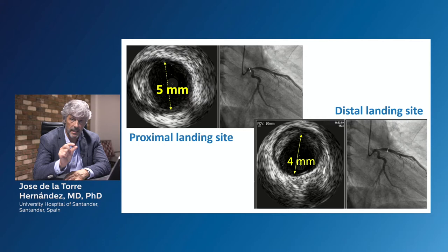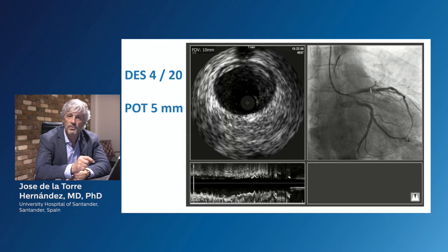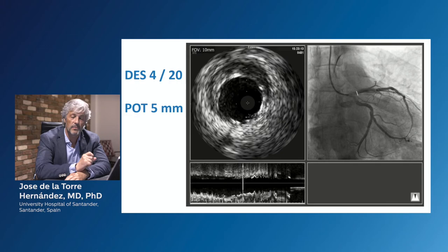We also could select the stent diameter because in the proximal landing site we see 5 millimeters in the left main, and in the distal landing site the LAD was 4 millimeters. Given these numbers, the selection was a 4-millimeter stent diameter, 20 millimeters in length based on our measurements, and a proximal optimization of 5 millimeters.